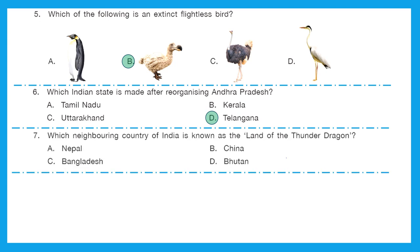Question 7: Which neighboring country of India is known as the land of thunder dragon? Is it Nepal, China, Bangladesh, or Bhutan? The right answer is option D, Bhutan. Bhutan is recognized as the land of thunderbolt due to the extreme and large thunderstorms which come via the valley from the Himalayas.